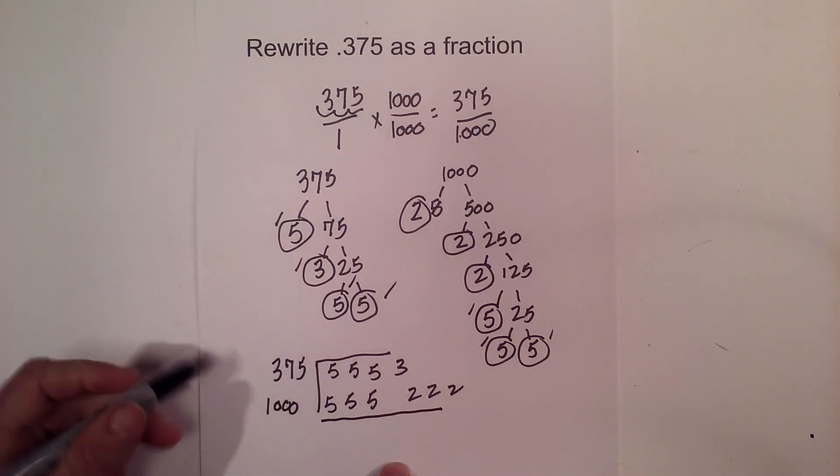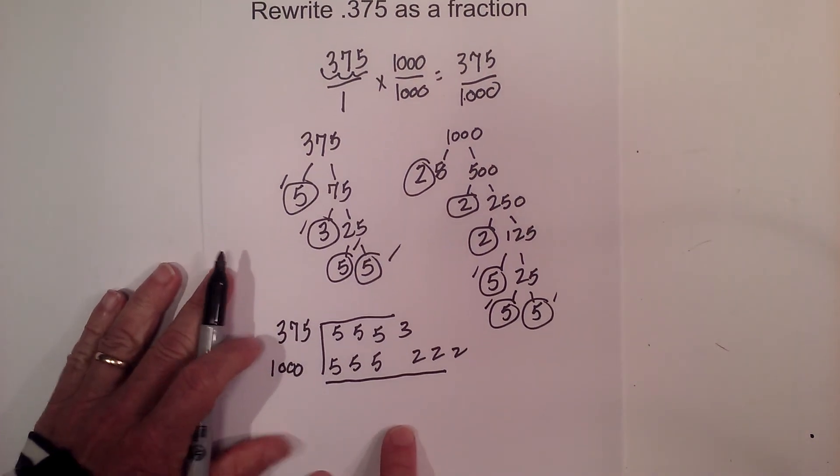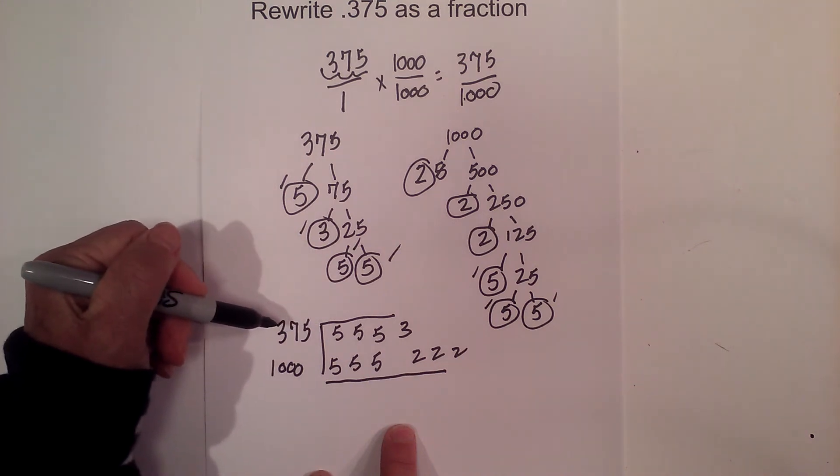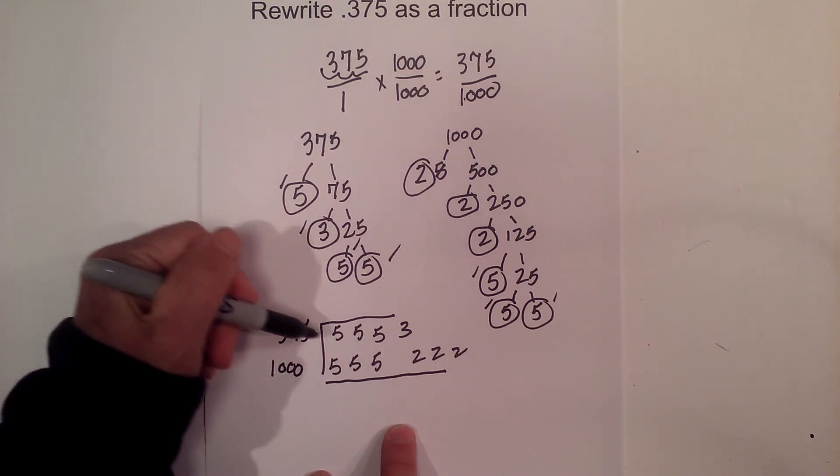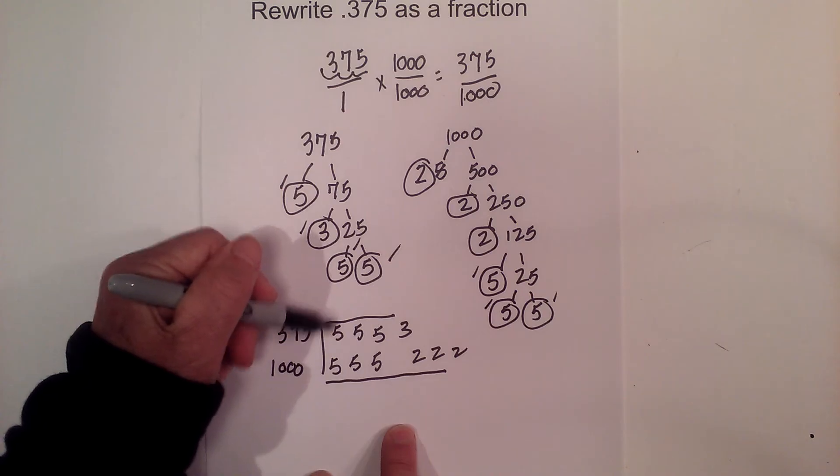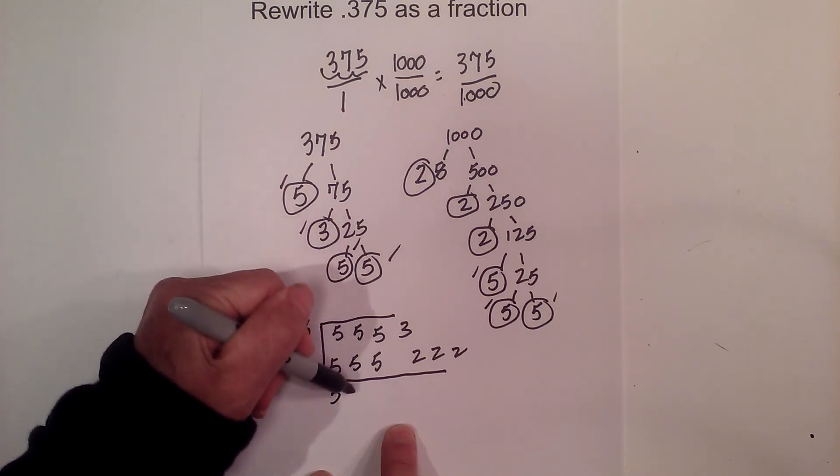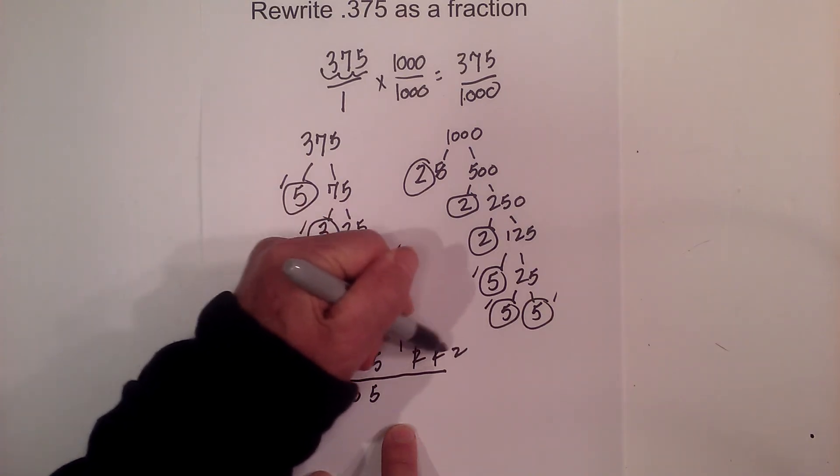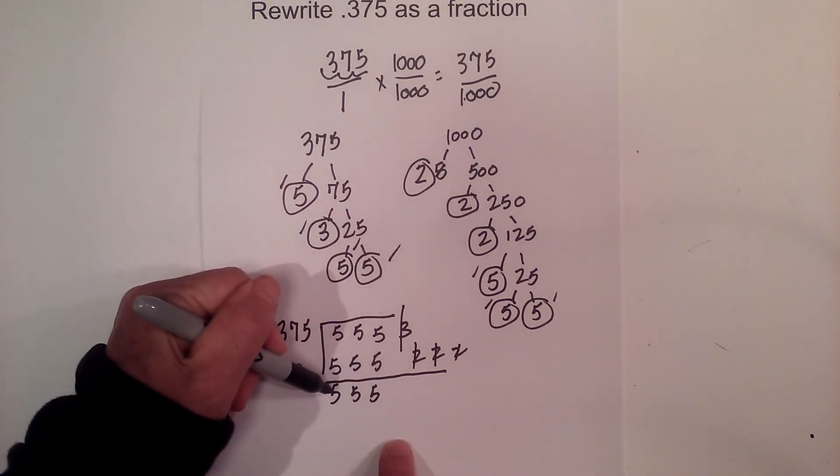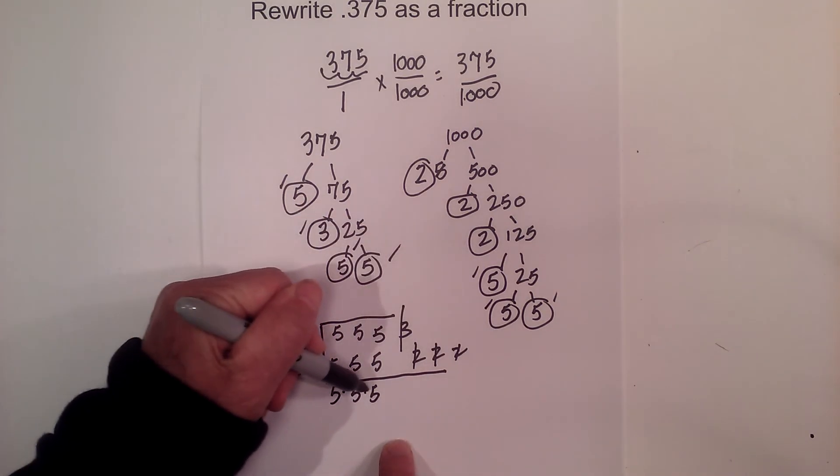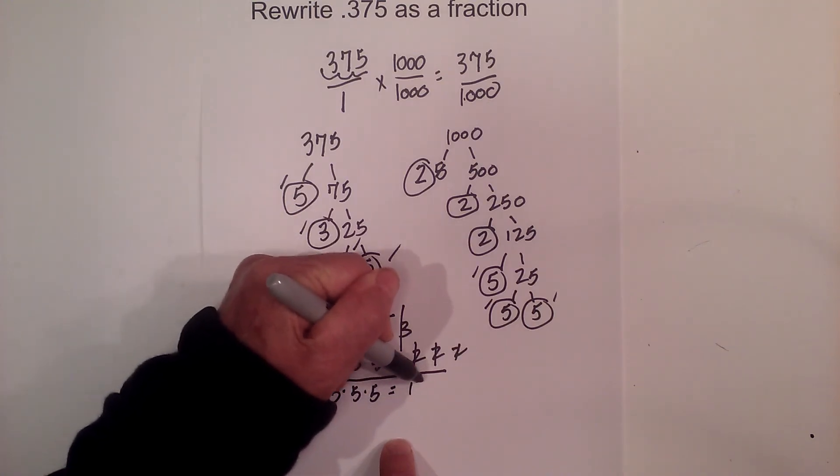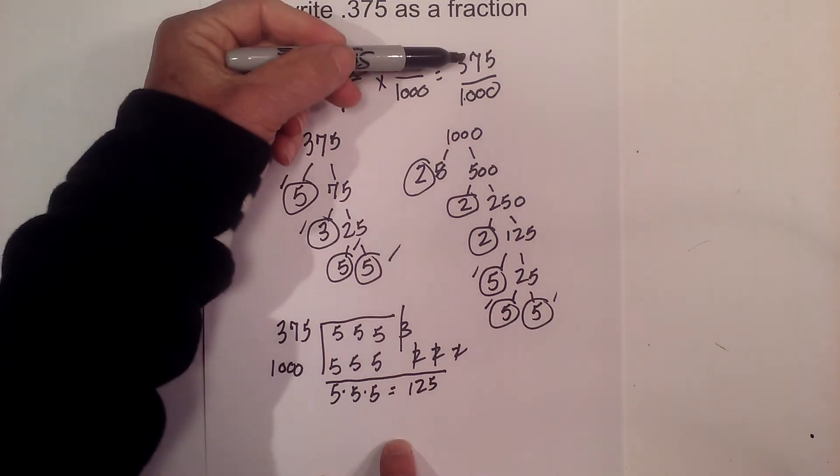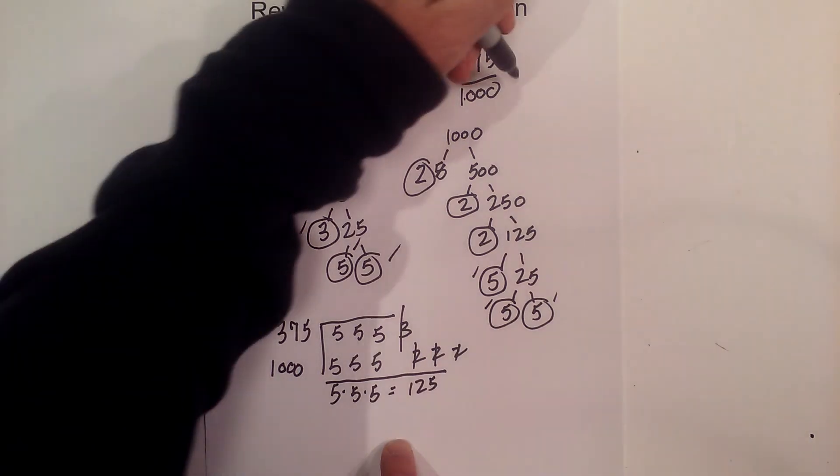So now we look for vertical pairs. And we have a vertical pair here. Since we're finding the greatest common factor of only two numbers, you need only two numbers in the vertical pair. So vertical pair, vertical pair, vertical pair. So now I multiply 5 times 5 times 5 for the greatest common factor, and that's 125. So the greatest common factor of 375 and 1000 is 125.